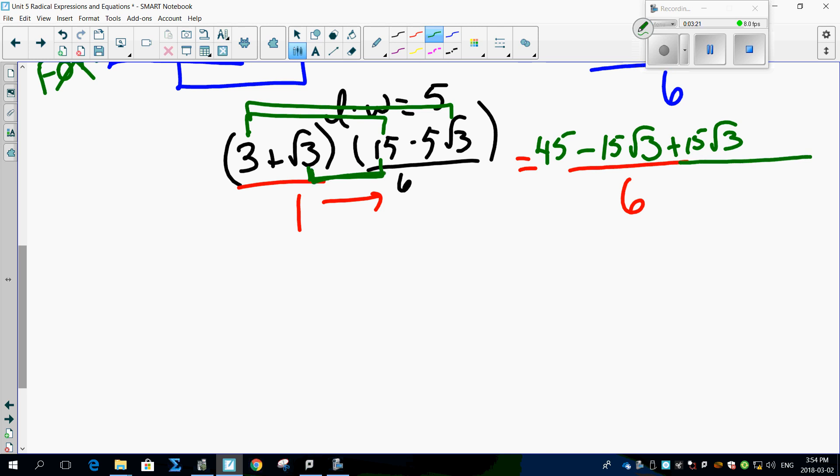And then, check this out. Root 3 times minus 5 root 3 is minus 5. Root 3 times root 3 is 3. Check it out. This is going to freak you out when you see it. So this and this, of course, cancels, leaving you with 45 minus, well, 5 times 3 is 15. Over 6.